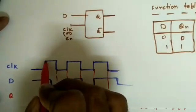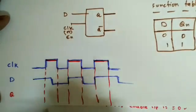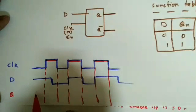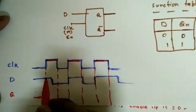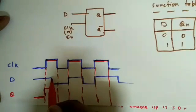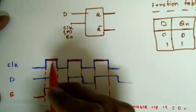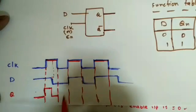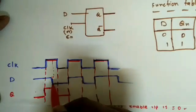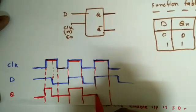Looking at the timing diagram for a positive level-triggered D latch: when the positive level comes, depending on D we get the output. The moment clock is high, it follows D — so if D is high the output goes high. After some time if D changes to zero but the clock is still high, the output also goes to zero. When clock goes low it maintains the previous state, then follows D again when clock goes high.